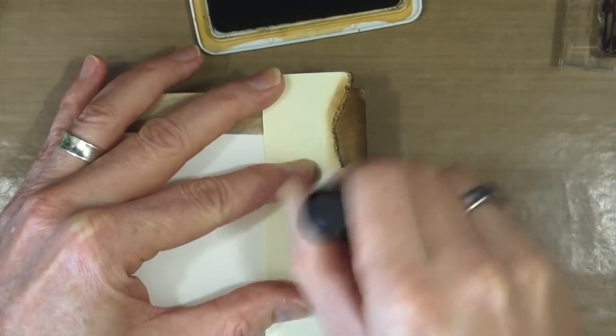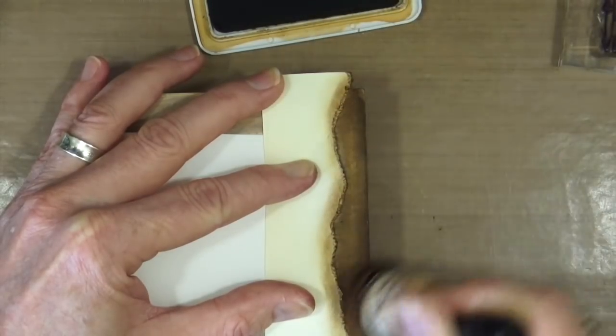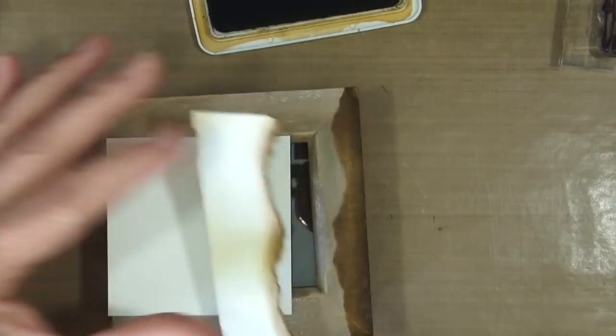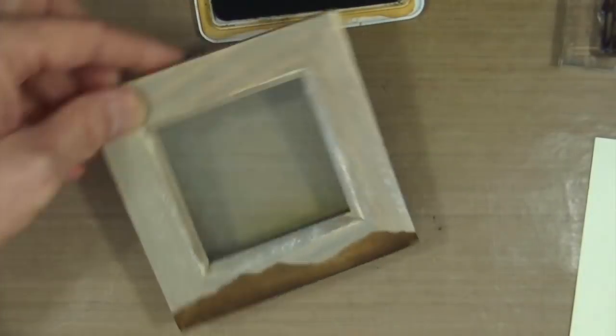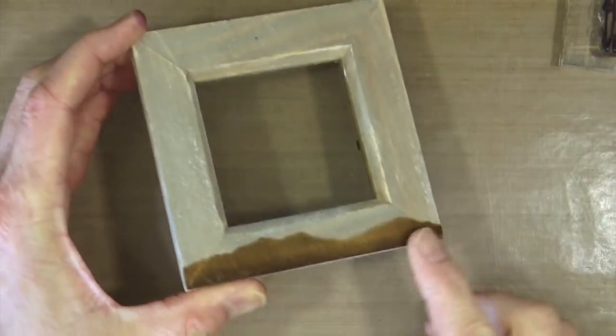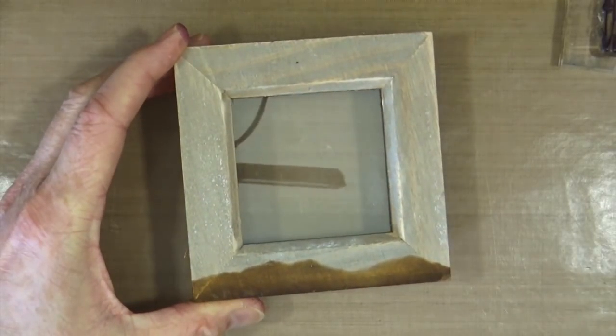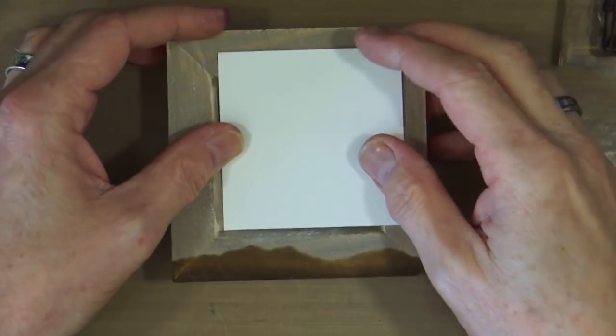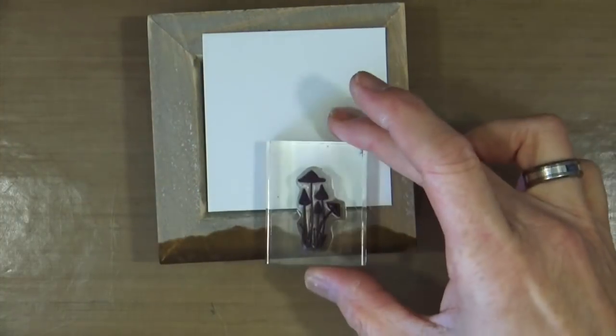And because the frame is made out of wood, it's a porous surface, so the ink soaks in really nicely into the wood frame. Once again, I'm going to bring back those mushrooms. I'm just going to put a piece of card across the glass so that you're not staring at the camera which is pointing directly down onto it.